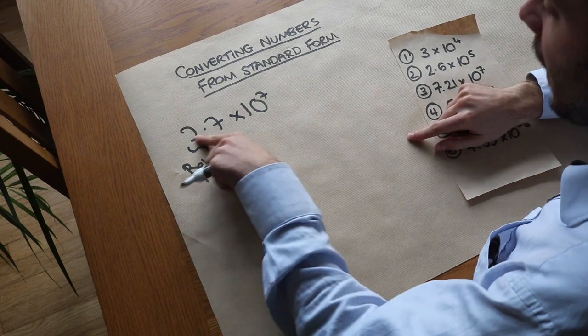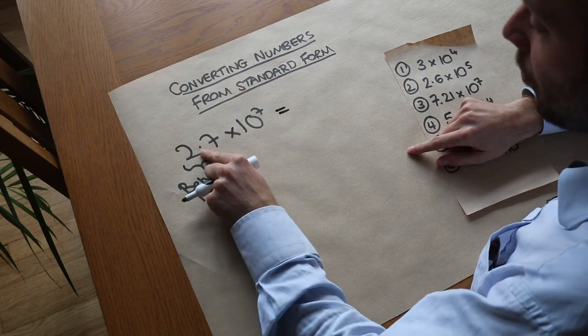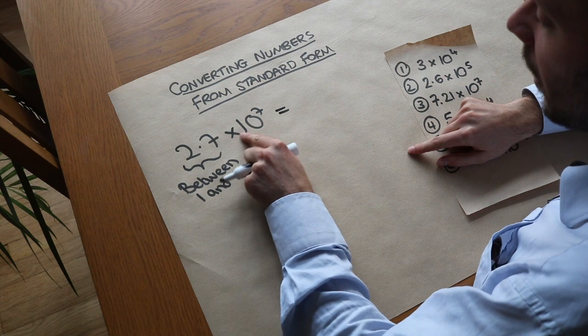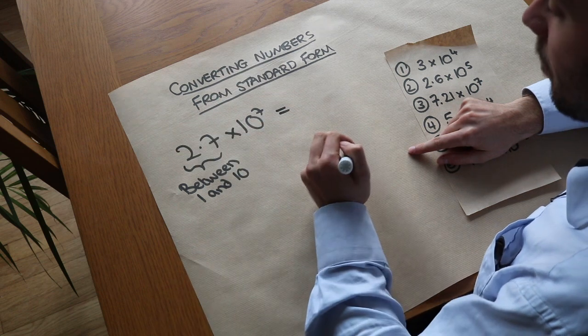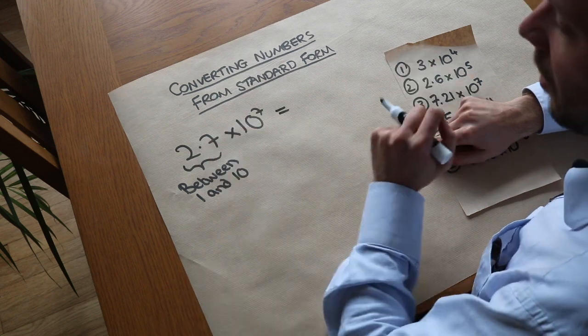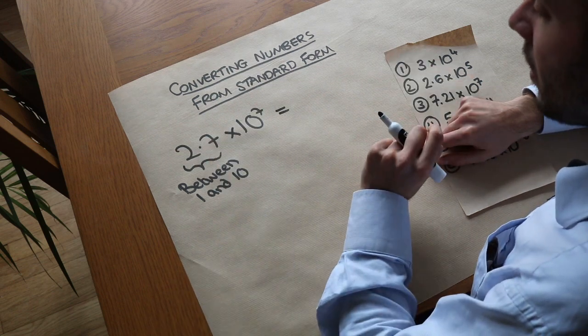Now let's just think what this actually means. It means 2.7 and you're multiplying by 10 seven times, because 10 to the 7 means 10 times 10 times 10 times 10, seven times. Remember each time that you multiply by 10 you move the decimal point.